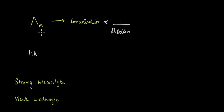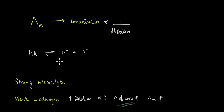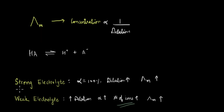If you have some electrolyte HA which is dissociating into H+ and A-, if this is a weak electrolyte, the extent of this dissociation will be very less. And if it's a strong electrolyte, this dissociation will be 100%. In the case of a strong electrolyte, when you increase the dilution or decrease the concentration, the molar conductivity increases. For weak electrolytes where the dissociation is not 100%, even then when you increase the dilution, the molar conductivity increases.